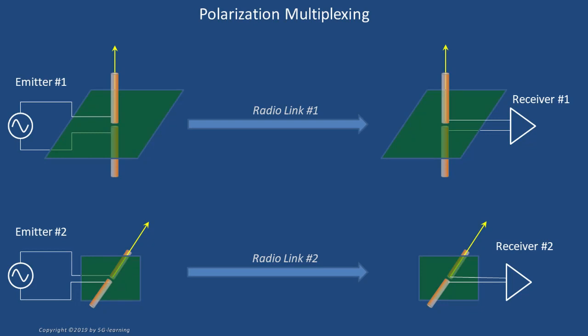Polarization may be used to provide, to some extent, two simultaneous and independent communication paths between transmitter and receiver on the same radio channel. This is a useful approach, as it doubles the data rate if both receivers belong to the same mobile phone. This mechanism, called polarization multiplexing, is extensively used in 4G and 5G cellular radio.